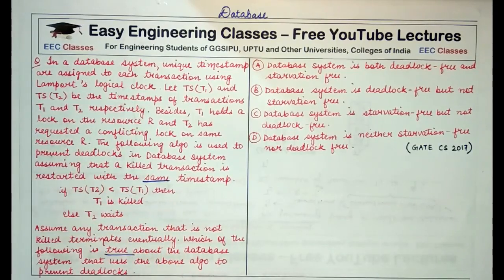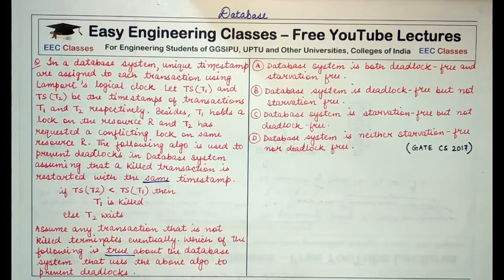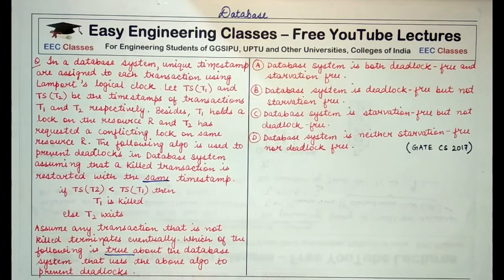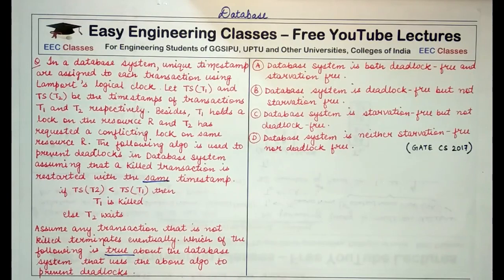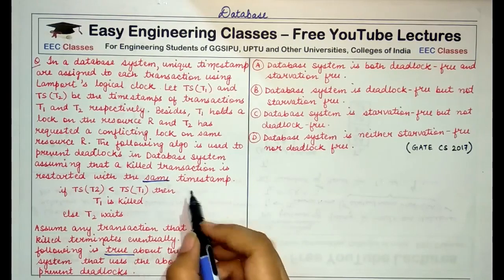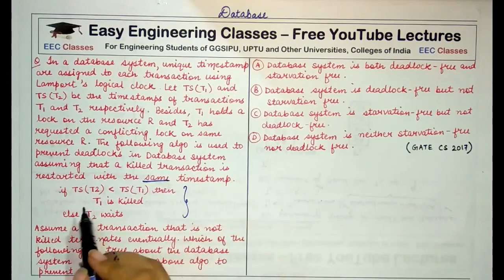First, regarding Lamport's logical clock: if timestamps are assigned to transactions using Lamport's logical clock, this simply means timestamps are given to transactions in the order in which they appear. A transaction coming first will have a lower timestamp compared to a transaction coming later.